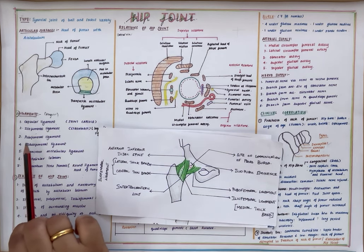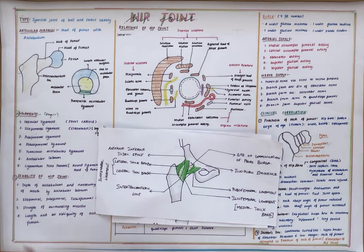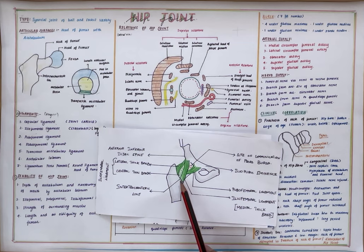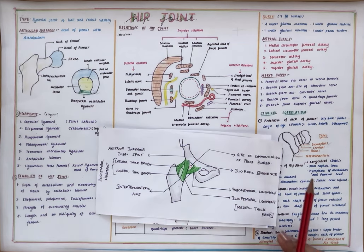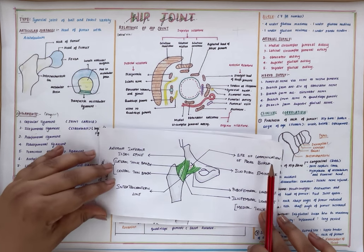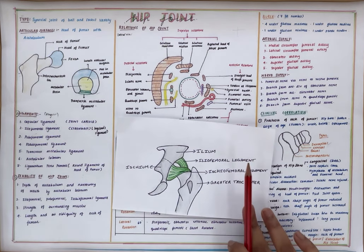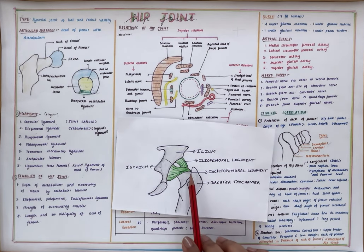Then we have the pubofemoral ligament, which extends from the iliopubic eminence of the pubis. As it comes down, it blends with the joint capsule and the iliofemoral ligament. The next is the ischiofemoral ligament, which extends from the ischium to the greater trochanter.